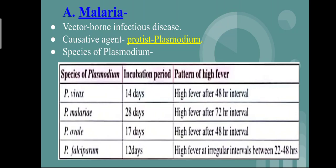Plasmodium falciparum is considered the most serious species because most deaths occur due to infection by this species. It has an incubation period of 12 days and shows high fever at irregular intervals of 22 to 48 hours.